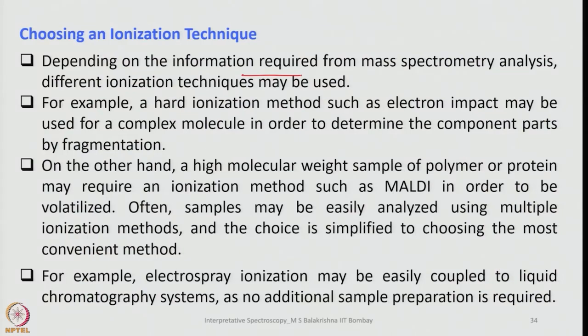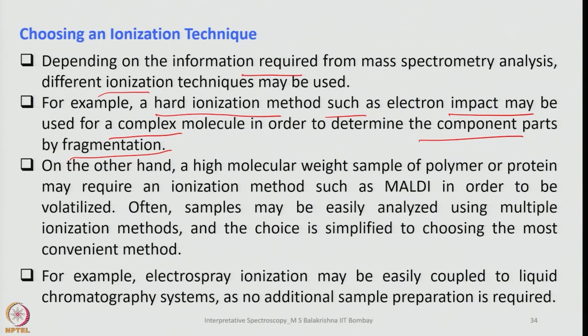How to choose an ionization technique? We have several ionization techniques, and the choice usually depends upon what information is required for the mass spectrometry analysis. For example, a hard ionization method such as electron impact may be used for a complex molecule to determine the component parts by fragmentation — when you are not getting the molecular ion peak, fragmentation allows you to assemble the constituent parts. On the other hand, a high molecular weight sample of polymer or protein may require MALDI, since electron impact cannot go beyond about 1000 molecular weight.